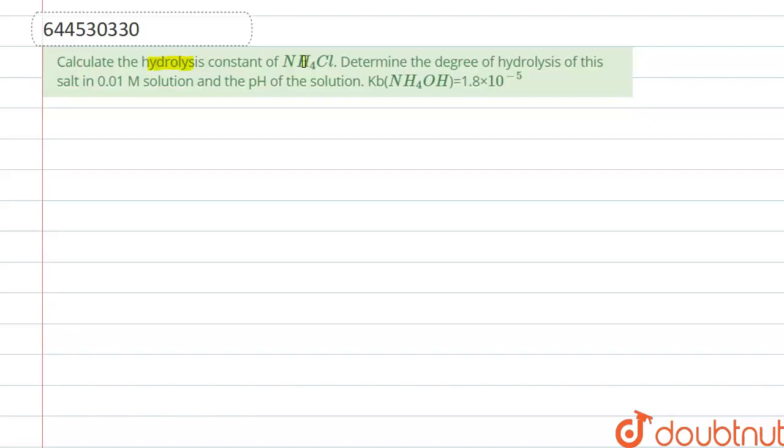Calculate hydrolysis constant of NH4Cl. Determine the degree of hydrolysis of this salt in 0.01 molarity solution and the pH of the solution, while Kb of NH4OH is given, that is 1.8 into 10 to the power minus 5.